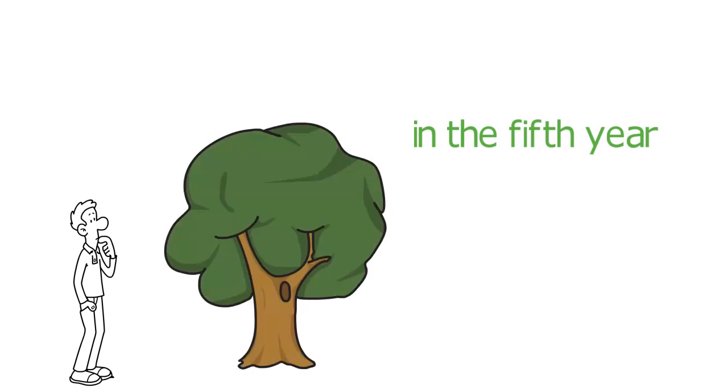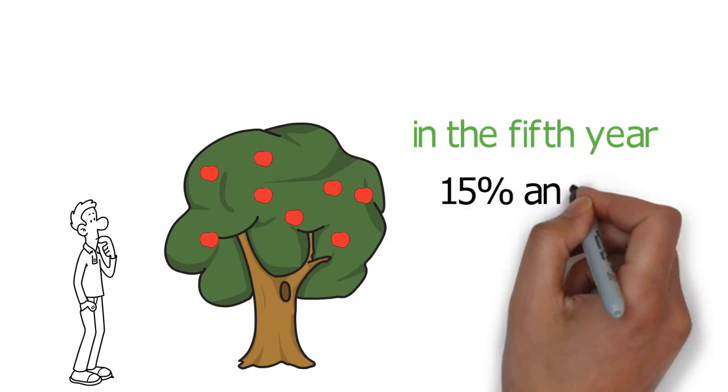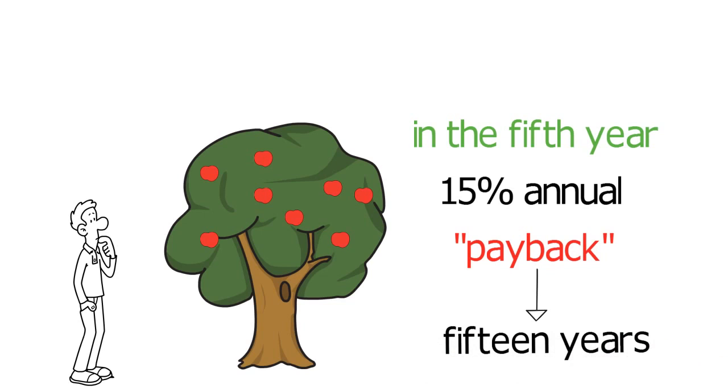Already in the fifth year, the tree is big enough to produce fruits, and you will get a 15% annual payback every year for 15 years.